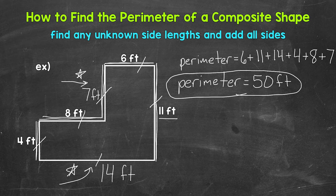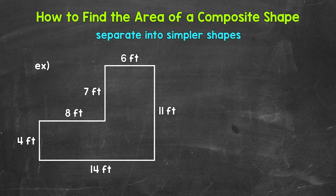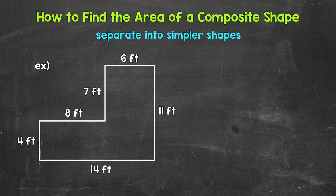Let's move on to finding the area. Now remember, area is the amount of space or surface inside of a shape — how much space or surface something covers. When we find the area of composite shapes, we can separate the shape into simpler shapes, find the area of those shapes, and then add them together to find the total area. You'll notice we don't have a simple rectangle, square, or triangle, so let's separate this shape into simpler shapes to work with.